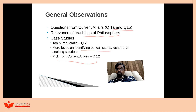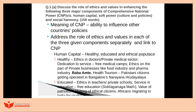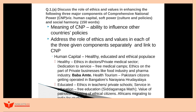Let us take the first question: 'Discuss the role of ethics and values in enhancing the following three major components of comprehensive national power — human capital, soft power, and social harmony.' This is a question picked from current affairs about comprehensive national power. But the question is very clear — it gives you three components. Even if you are not aware of the concept of comprehensive national power, you will still be in a position to answer very comfortably, because they have given you the three sub-components.